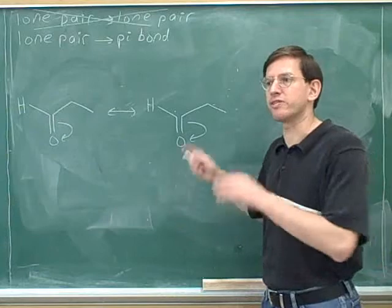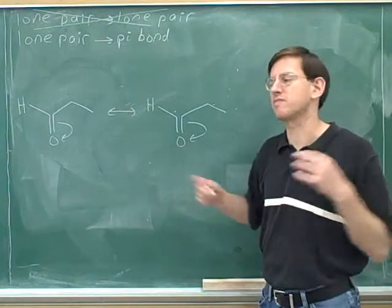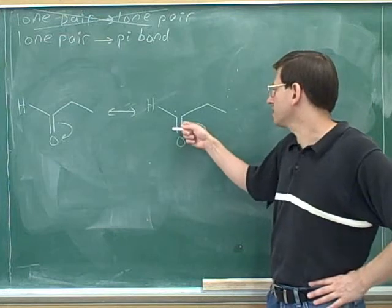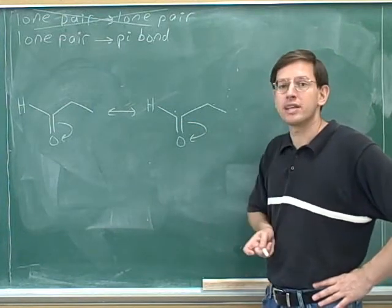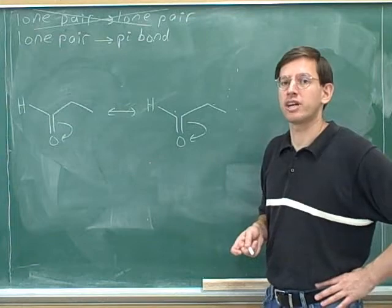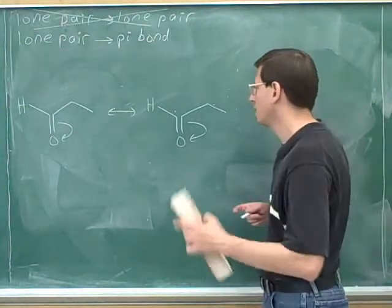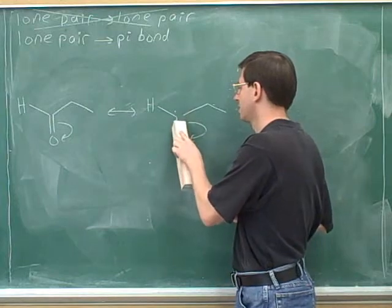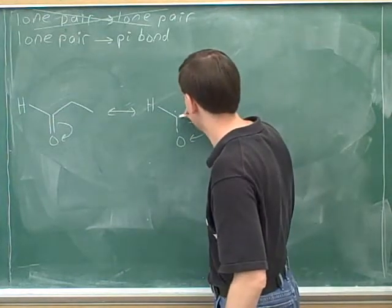You can see this is a different pattern than the examples we've been doing. Now the tail of the arrow is on the pi bond. So where are the electrons coming from? The electrons are coming from the pi bond, so we should erase the pi bond, because the electrons aren't going to be there anymore.